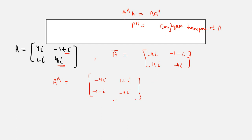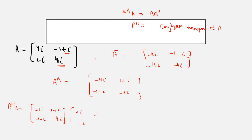Now let's figure out the left-hand side: A raised to the power H times A. So A^H is: first row minus 4 iota, minus 1 minus iota; second row 1 plus iota, minus 4 iota. Multiply with A. First row, first column: minus 4 iota into 4 iota gives minus 16 iota squared, plus 1 plus iota times 1 minus iota, which is A squared minus B squared. Then for first row, second column: minus 4 iota into minus 1 gives plus 4 iota, then minus 4 iota squared.